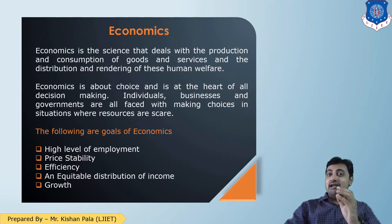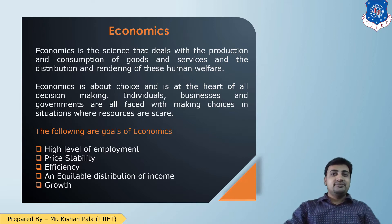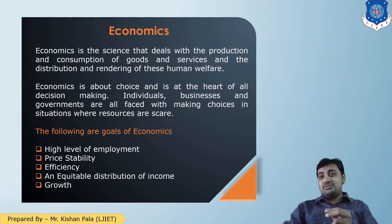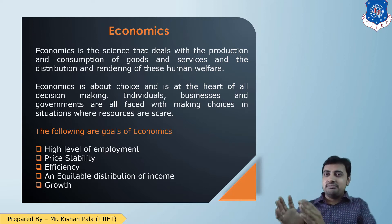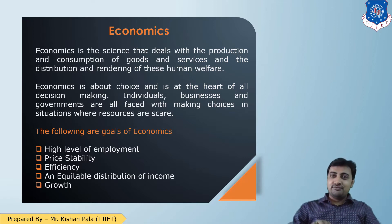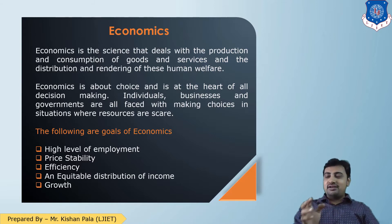Individuals, businesses, and the government sector are all faced with choices in situations where resources are scarce. For example, in our construction field we use cement, and for cement production we require limestone, which is a limited raw material. If we use only cement, there will be scarcity of raw material. So we have to go for alternative sources, such as supplementary cementitious materials and other pozzolanic materials for cement production. This is the science of how to use raw materials, how to find alternative sources, how to distribute material, and how to meet market demand.